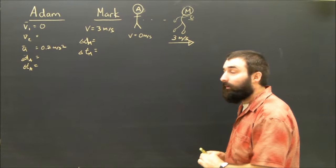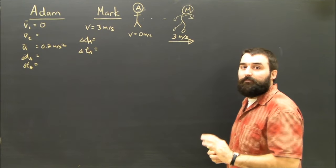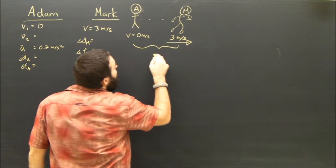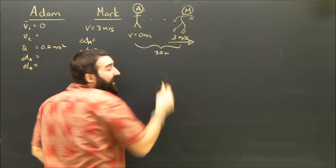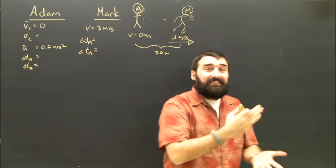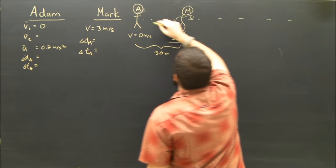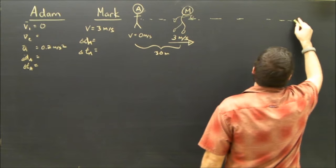Because look back at the question. What was 30 meters? 30 meters is how far apart Adam and Mark are at the start when t equals 0. Then at some point, Mark is going to keep on running, but at some point, Adam is going to speed up.